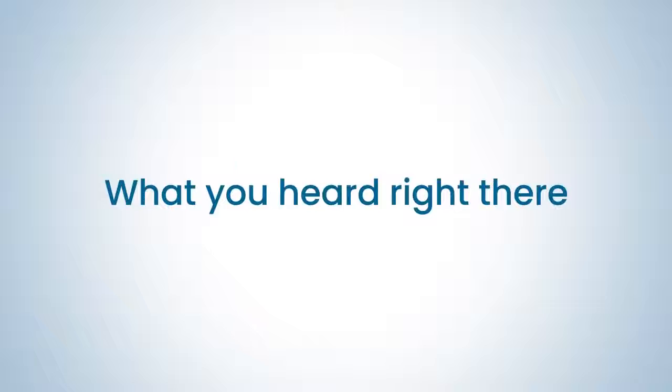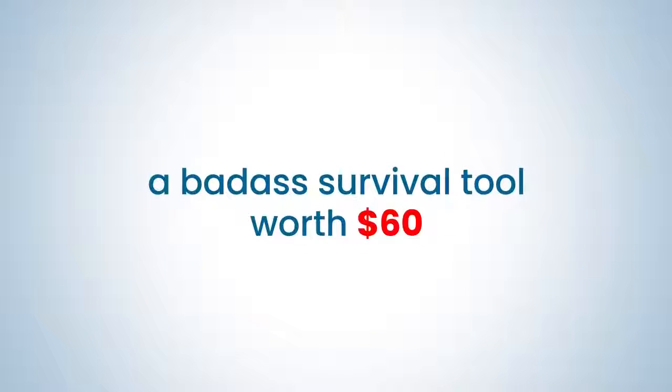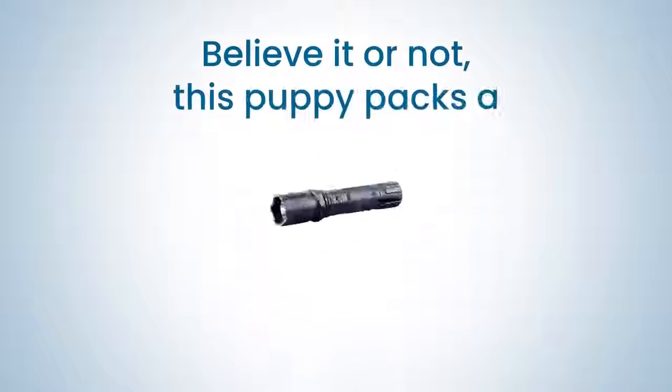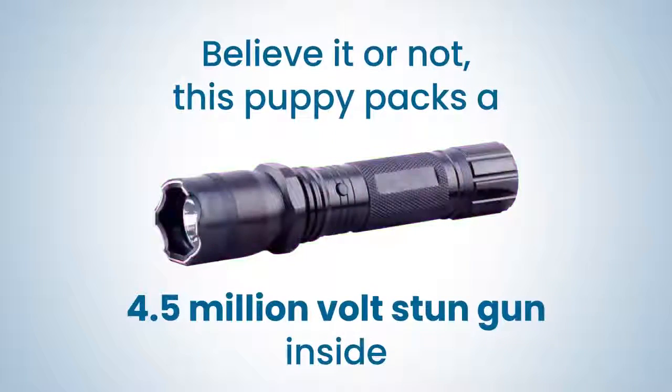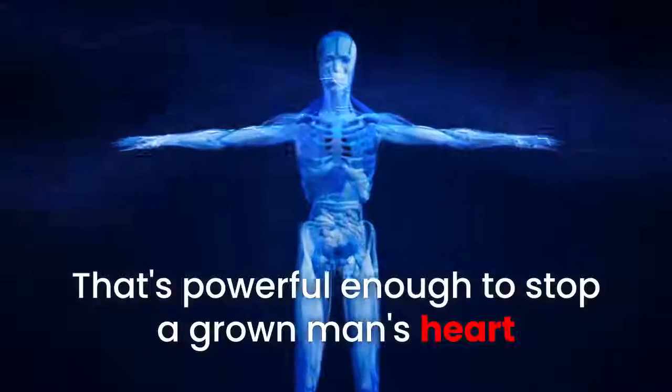What you heard right there is what makes the Shockwave Torch a badass survival tool worth $60. Believe it or not, this puppy packs a 4.5 million volt stun gun inside. That's powerful enough to stop a grown man's heart and it's powerful enough to help keep you safe if you were ever attacked.